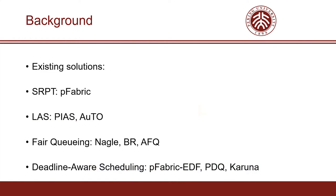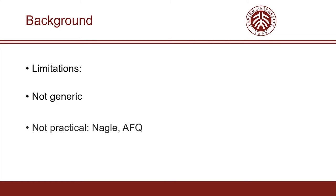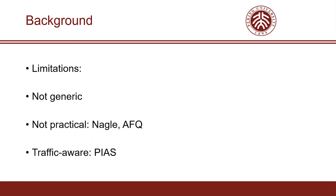Leveraging the multiple priority queues of switches, researchers have proposed a number of flow scheduling algorithms for different tasks. The existing solutions mainly have the following three limitations. First, most solutions are not generic — they are specialized for only one scheduling task. Second, a large number of solutions are not practical; for example, NACO requires a large number of queues, and AFQ requires complex operations of rotating the priorities of queues. Finally, some solutions need traffic patterns, and thus must measure the traffic and configure the queues in advance, such as Peers.